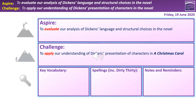An overview for today's lesson: we are very much looking at applying our understanding. Our challenge is to apply our understanding of Dickens' presentation of characters in A Christmas Carol — it's a character-driven piece. Hopefully a lot of you will also push to that ASPIRE outcome, which is to evaluate our analysis of Dickens' language and structural choices, both evaluating his choices and reflecting on how well we understand it and how confident we feel.